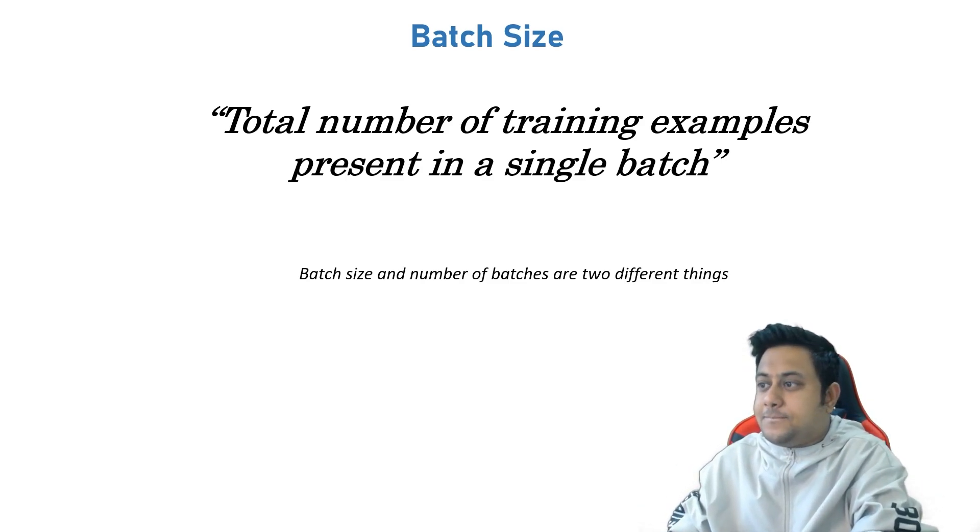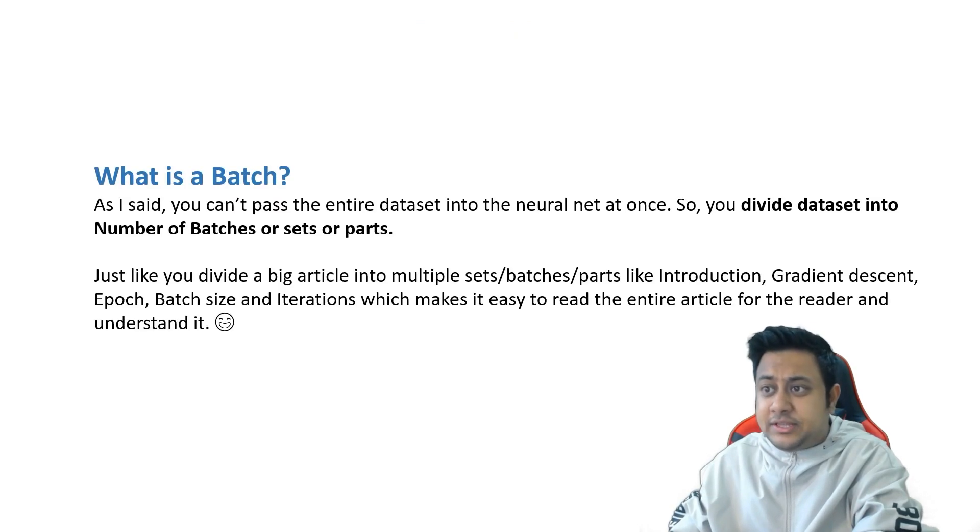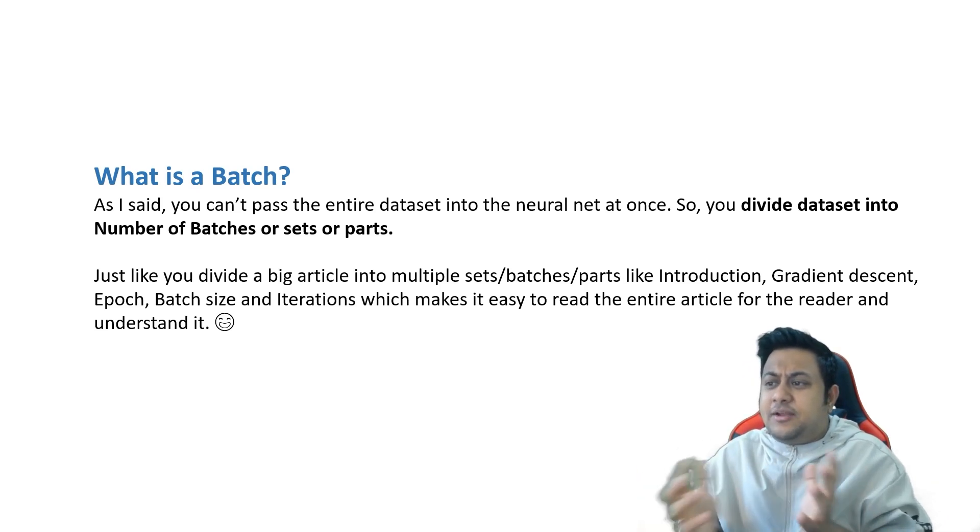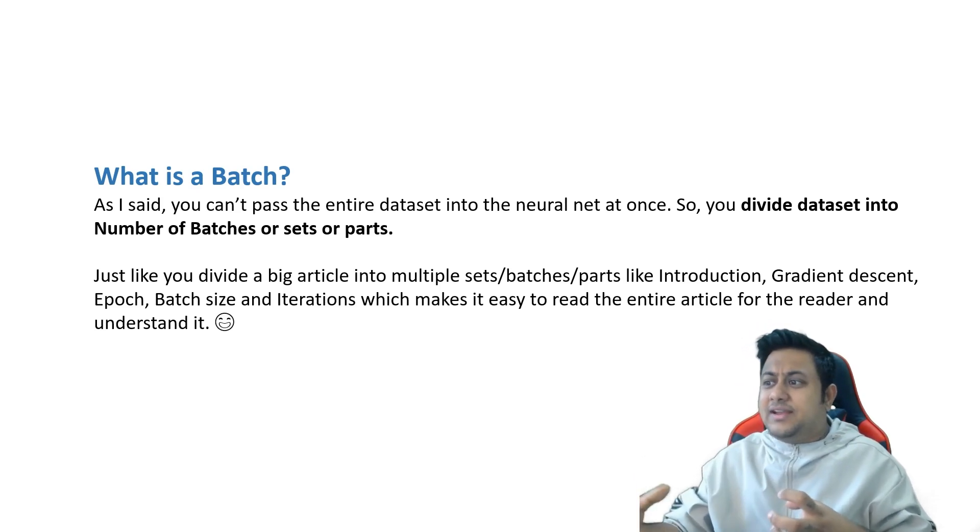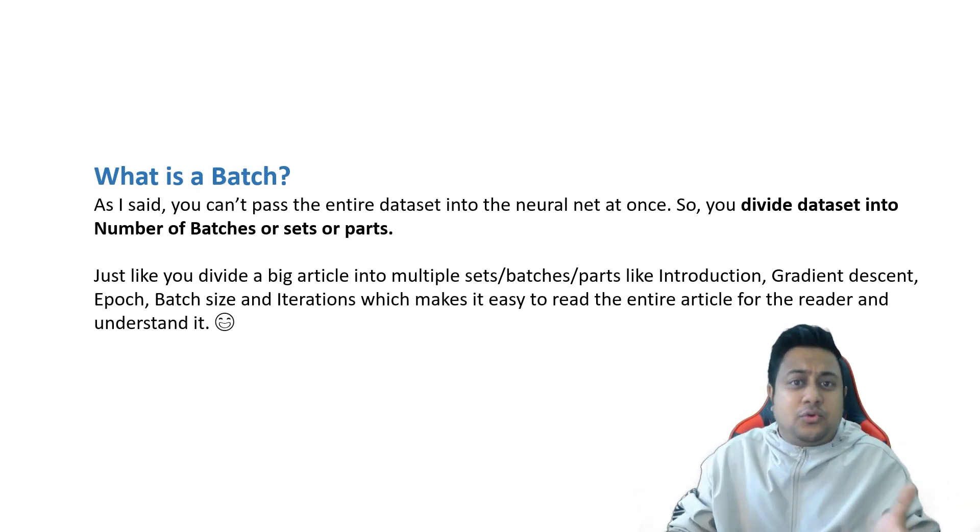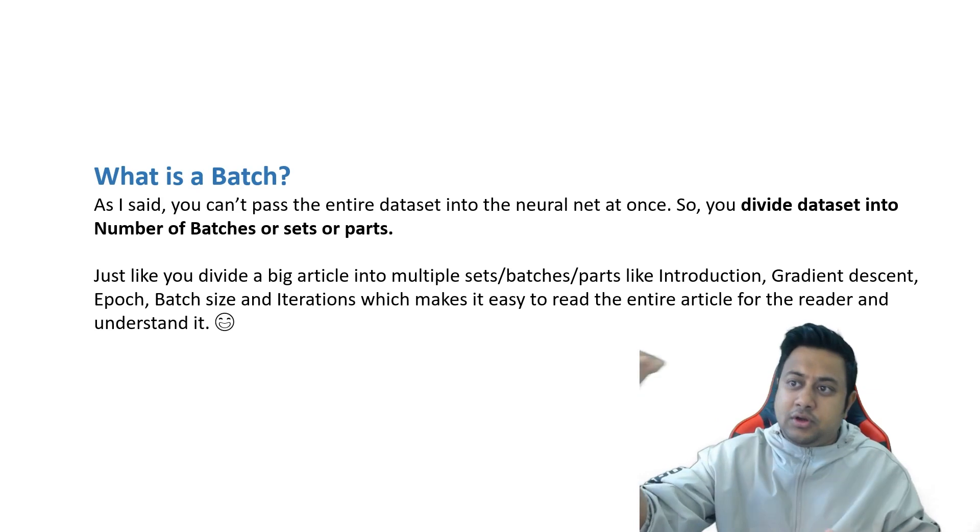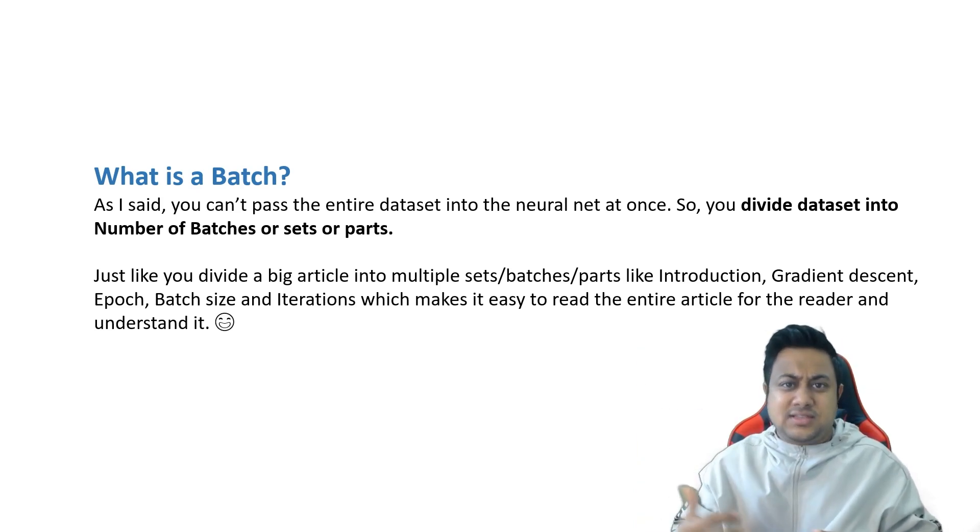Batch size and number of batches are two different things. What is a batch? As I said, you can't pass the entire dataset into the neural network, so you divide datasets into number of batches. Just like you divide a big article into multiple sets or batches or parts like introduction, gradient descent, epoch, batch size, and iterations, which make it easy to read the article. The same example is when you have enrolled for a course - you must have a table of contents where you have multiple chapters, right? So you have to learn chapter by chapter. That's exactly the concept of batch.